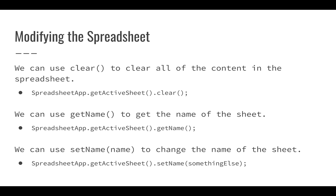If we want to modify the spreadsheet, we have a couple of options. We can clear everything using SpreadsheetApp.getActiveSheet().clear(), but that will wipe out all content and formatting — so it can be dangerous. However, there are situations where you may want to dump a bunch of new values in, so clear() can be useful if you know what you're doing. We can also use getName() to get the spreadsheet's name, and even set it to something relevant to the spreadsheet's content.